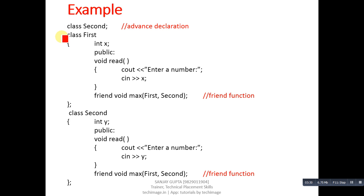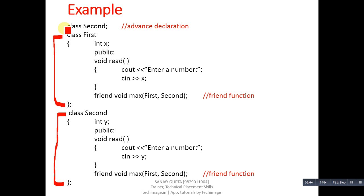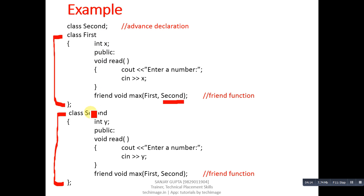In this example I have defined two classes: the first is named 'first' and the second is named 'second'. You can see that I have declared class second at the very first line of the program — this is known as a forward declaration. I am doing this because I am using the name of the second class in a function declaration, so the compiler needs to know what 'second' is.